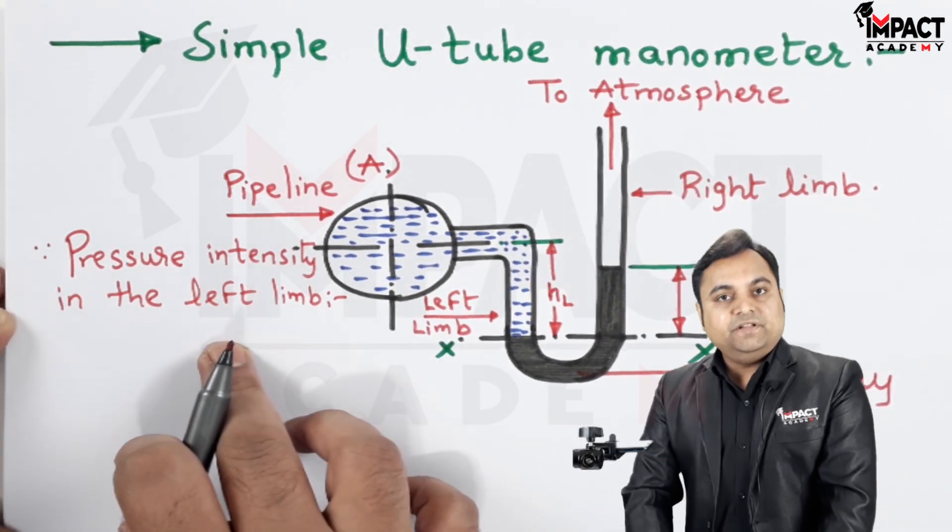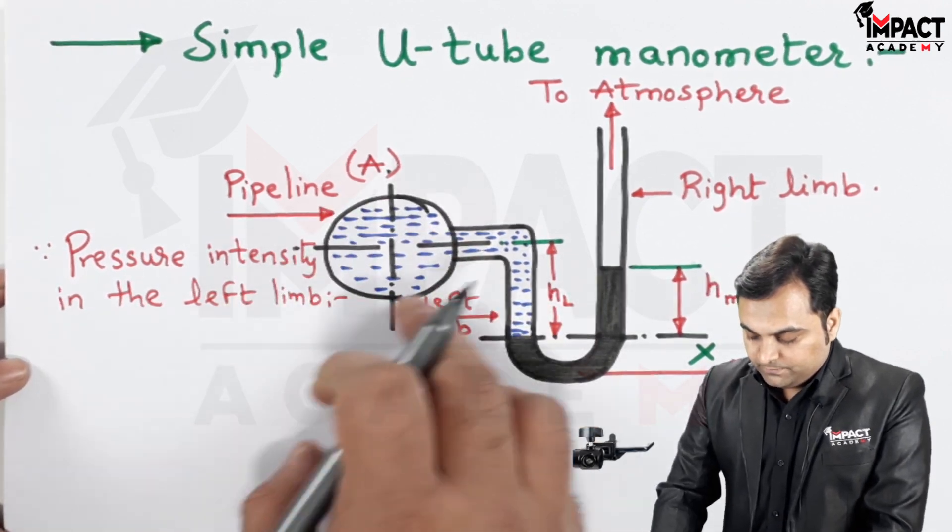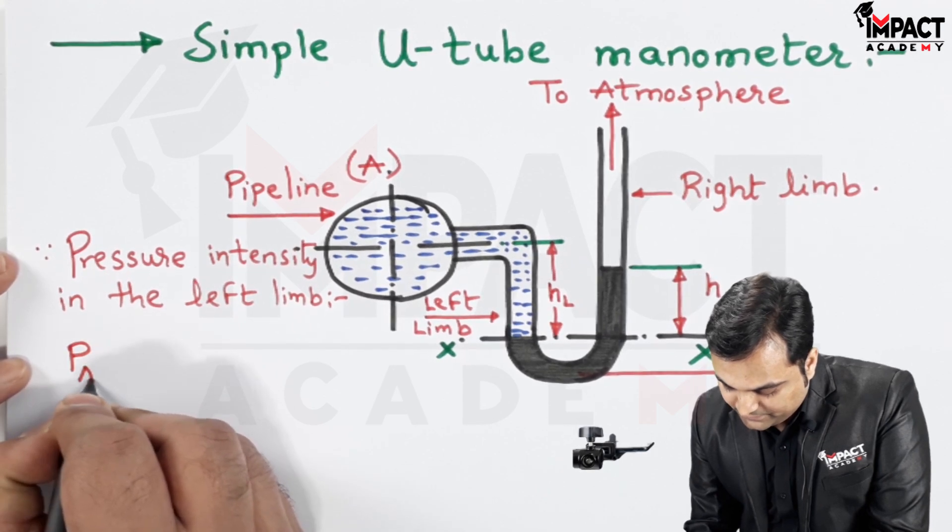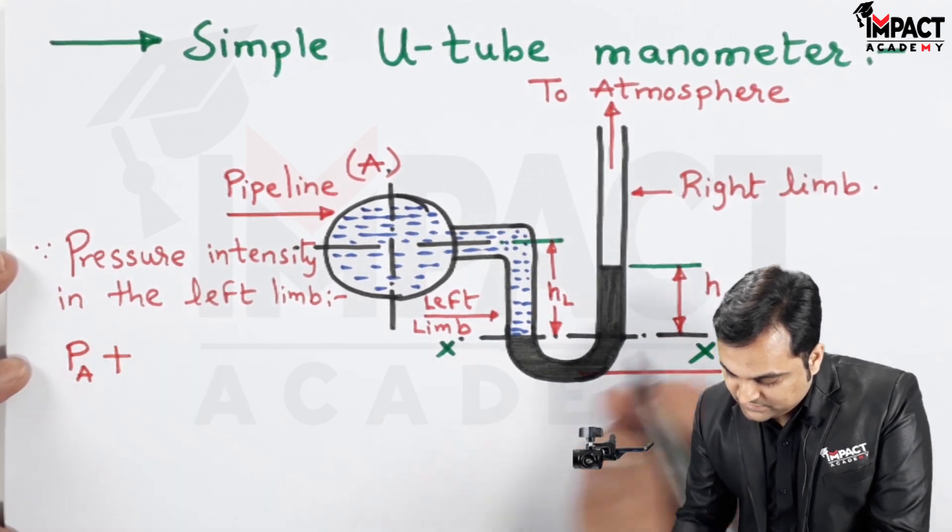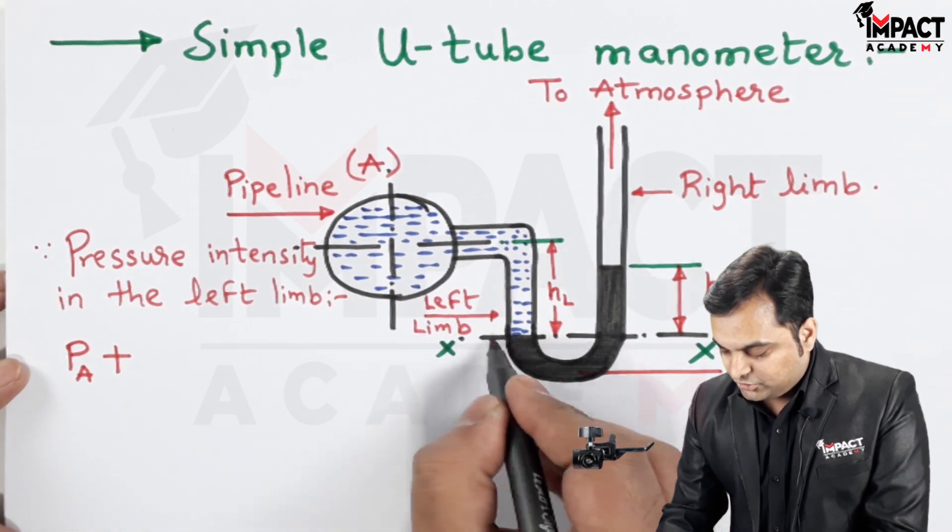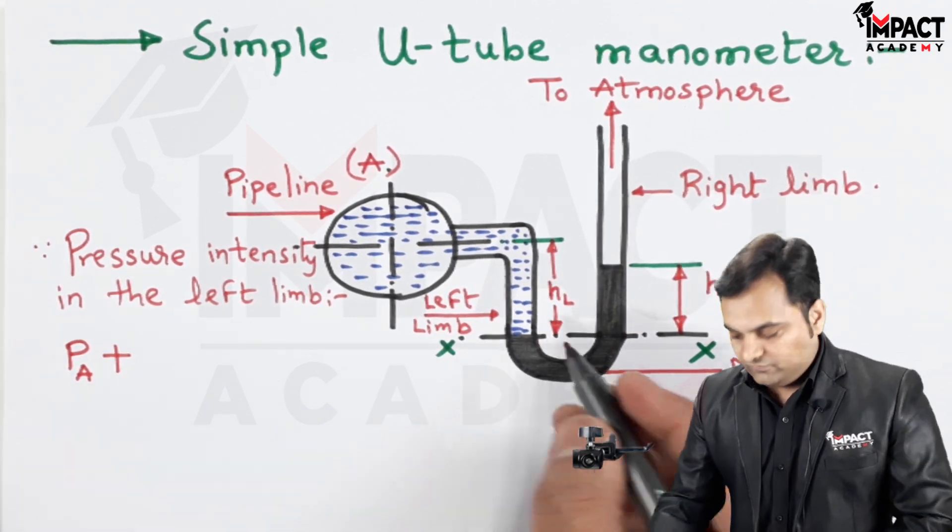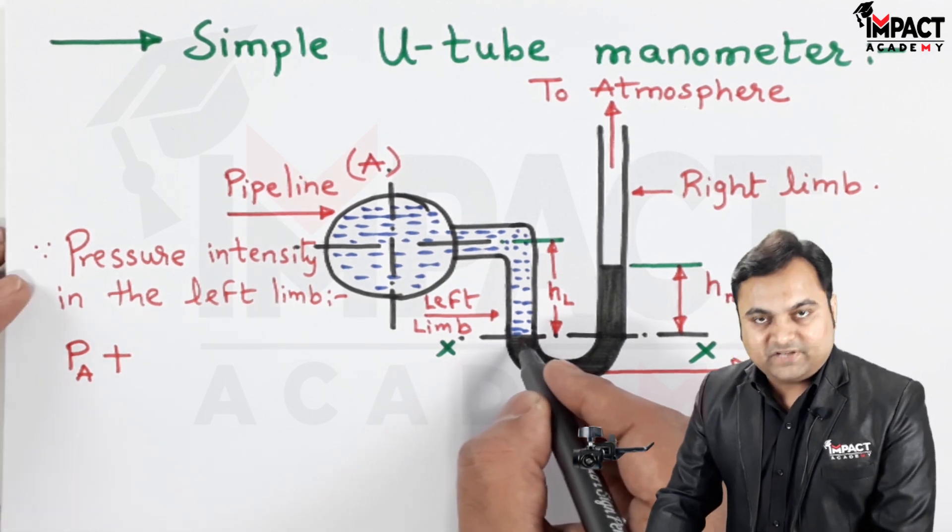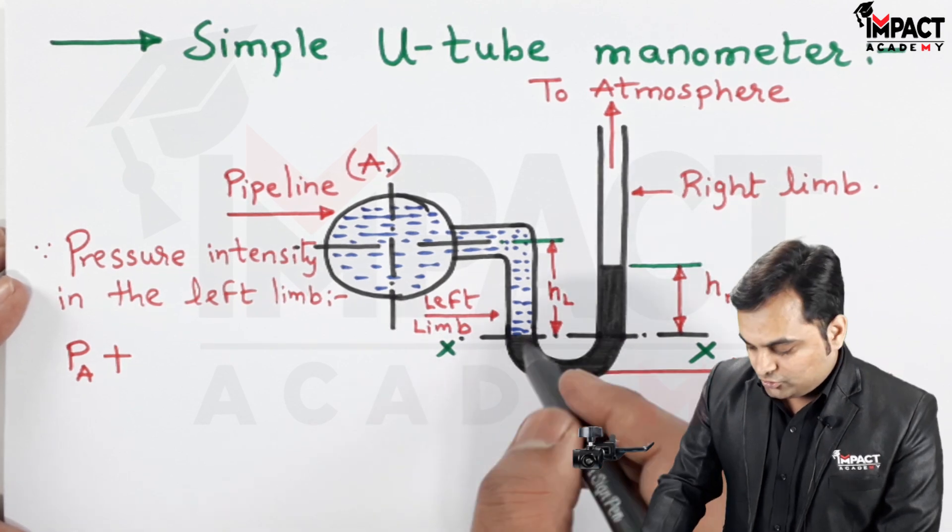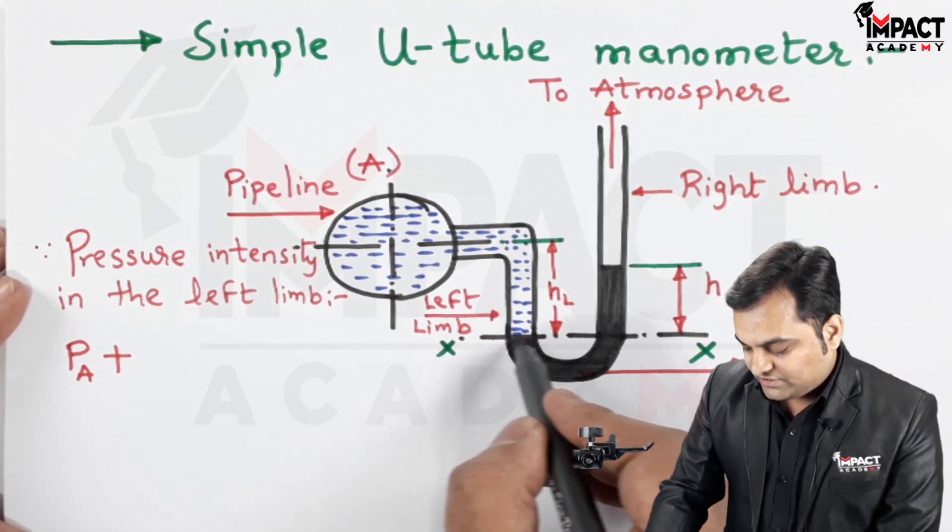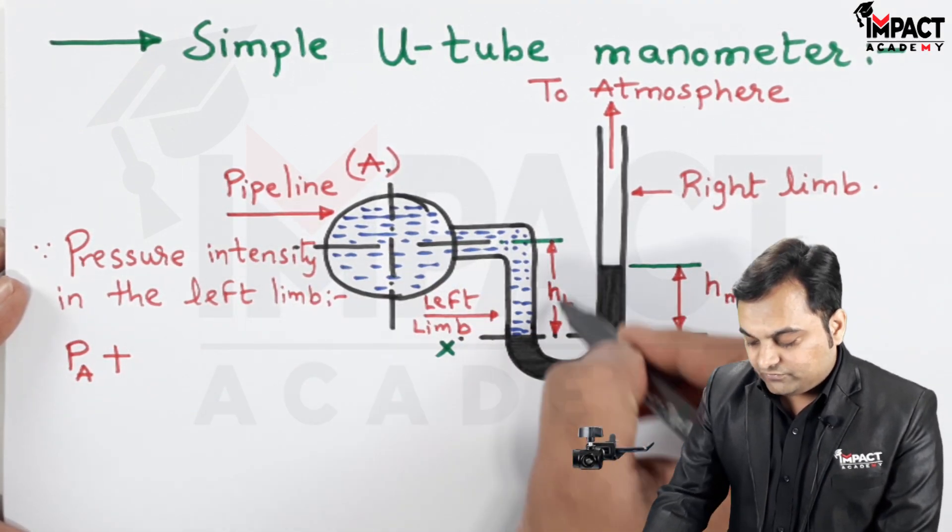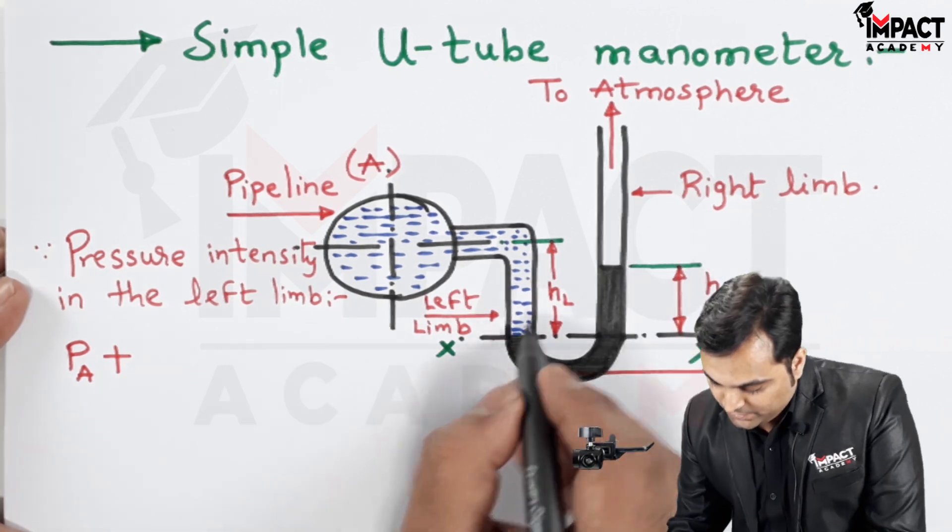The pressure intensity in the left limb would be pressure inside the pipeline A, which is denoted as P subscript A, plus the height of the liquid column, which would also be exerting a pressure on section XX. When we are looking at this section XX in the left side, we have to see how much total pressure is exerted over this. The intensity of pressure exerted on the left side is the pressure in pipeline A plus the height of the liquid column, which is H_L.